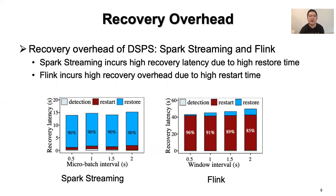To justify our claim, we evaluate the recovery latency of two widely used stream processing systems, Spark Streaming and Flink, under failures by varying their micro-batch intervals. For Spark Streaming, the recovery latency is about 30 seconds in all settings. We find that high recovery latency is mainly attributed to a high restore time, as Spark Streaming writes items to HDFS and reads them back after restarting the failed task. For Flink, the recovery latency is larger than 42 seconds in all settings, because when a failure occurs, Flink needs to stop and restart the processing of all operators to roll back to a consistent state.